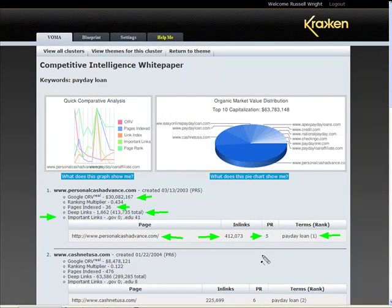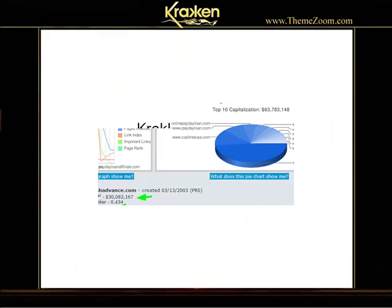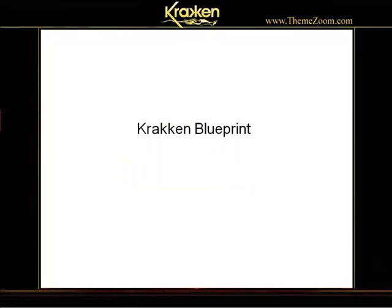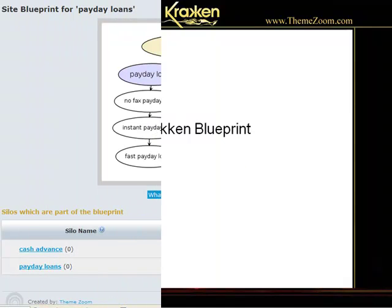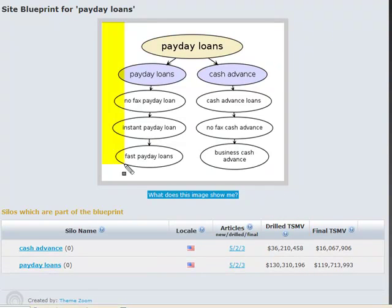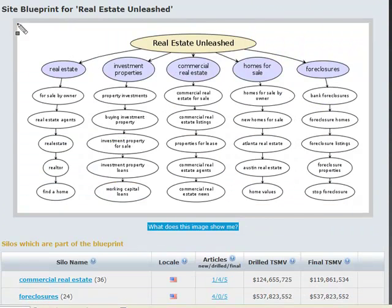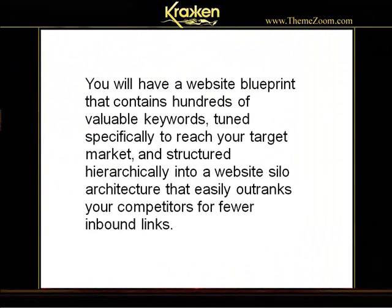Once you've finished your vertical online market analysis and competitive analysis, you're ready to move on to the Blueprint module. Simply choose the themes containing the synonymic sets that you want to include in your website blueprint, then sit back and let Kraken do all the work. Your blueprint can be as small or as large as you want it to be. Kraken will drill into each of the silos you selected and any articles that you specified. It will automatically choose ten of the best themes in each silo as articles and automatically populate each silo landing page and article page with supporting keywords using Kraken's advanced semantic analysis function. You will have a website blueprint containing hundreds of valuable keywords tuned specifically to reach your target market, structured hierarchically into a website silo architecture that easily outranks your competitors for fewer inbound links.